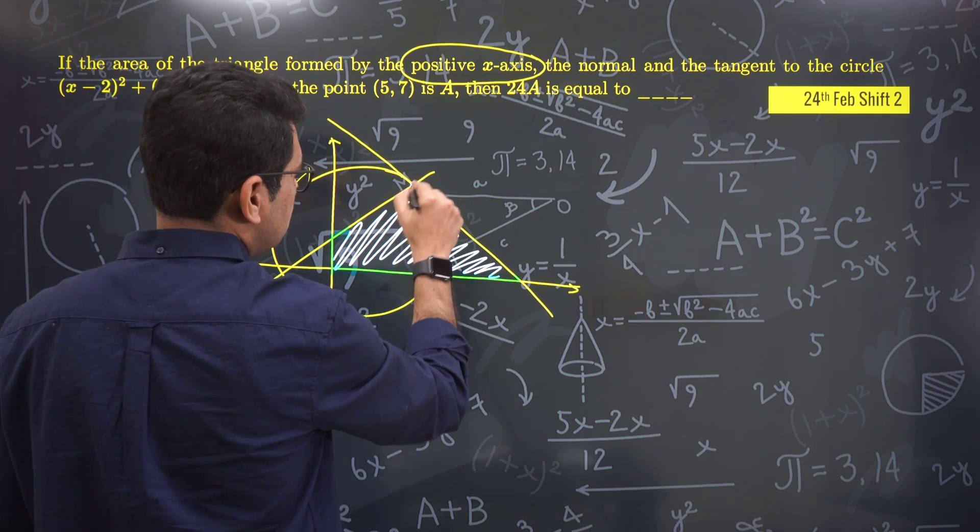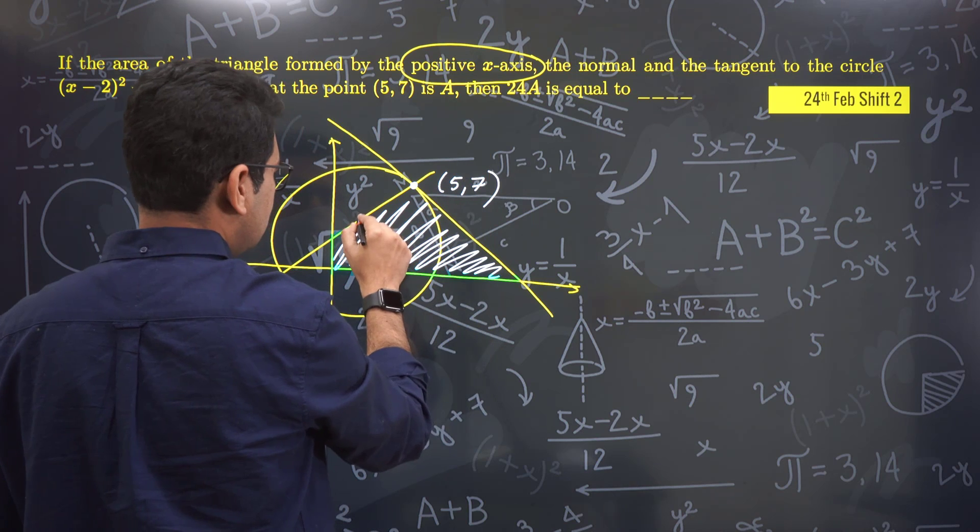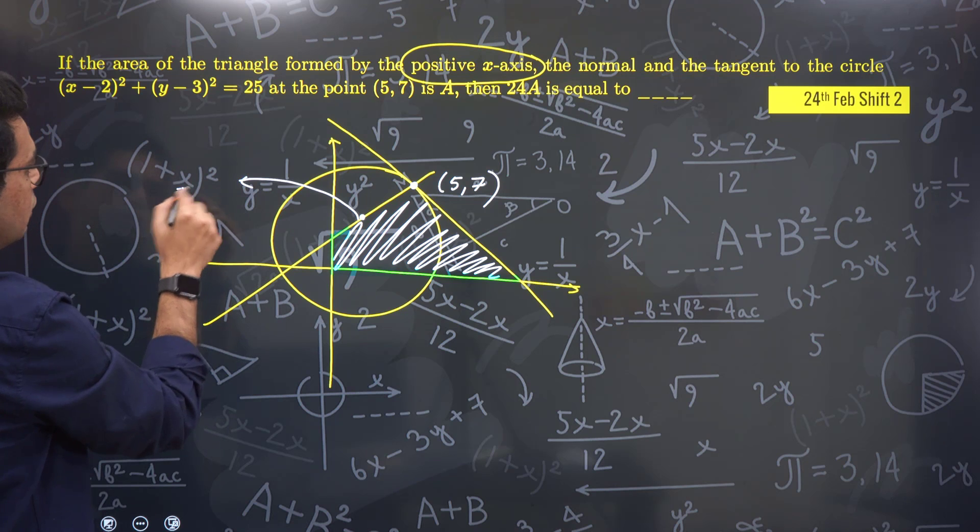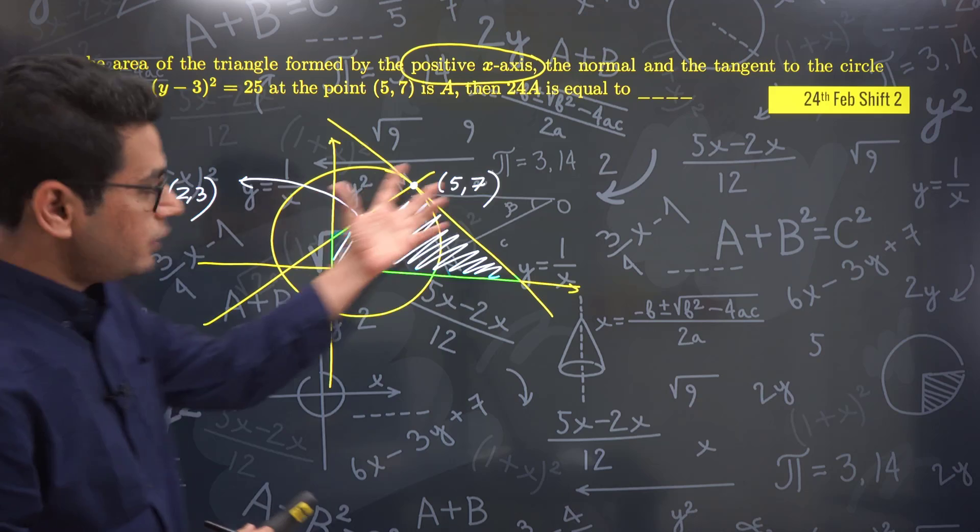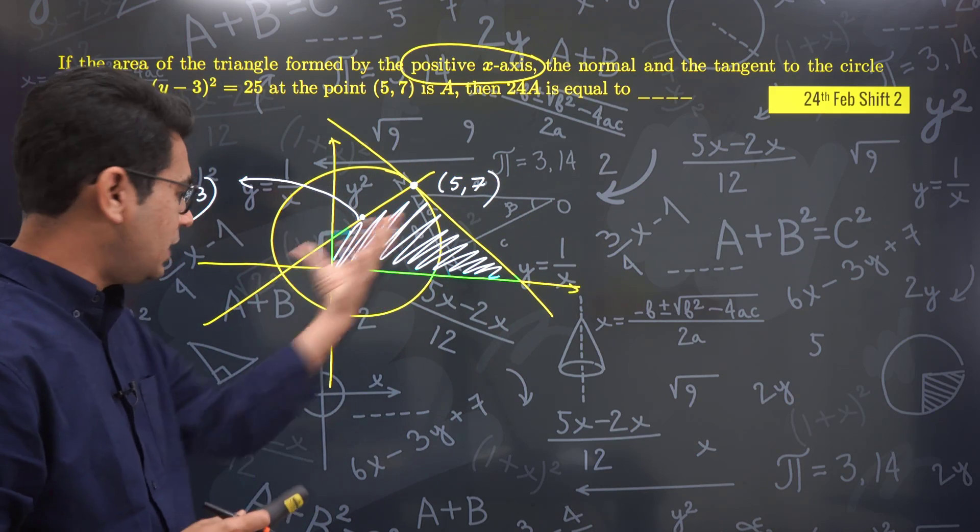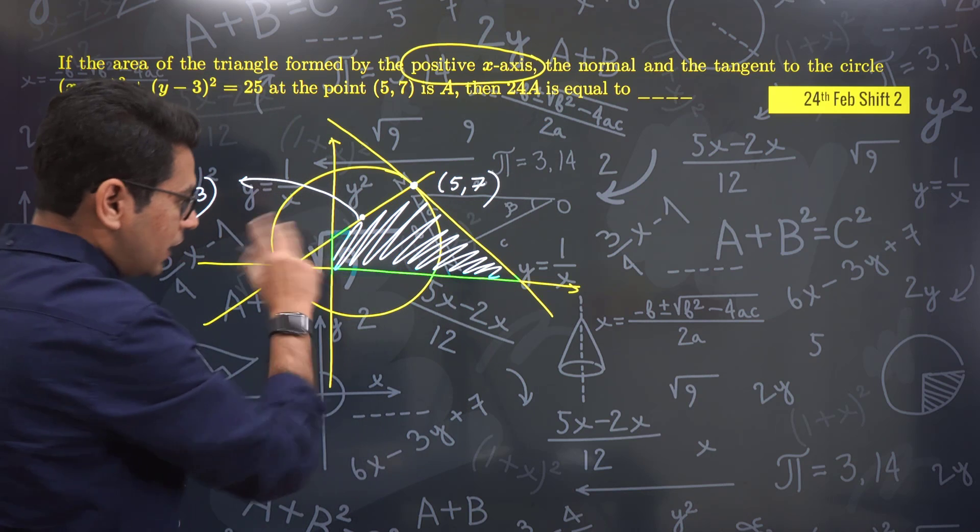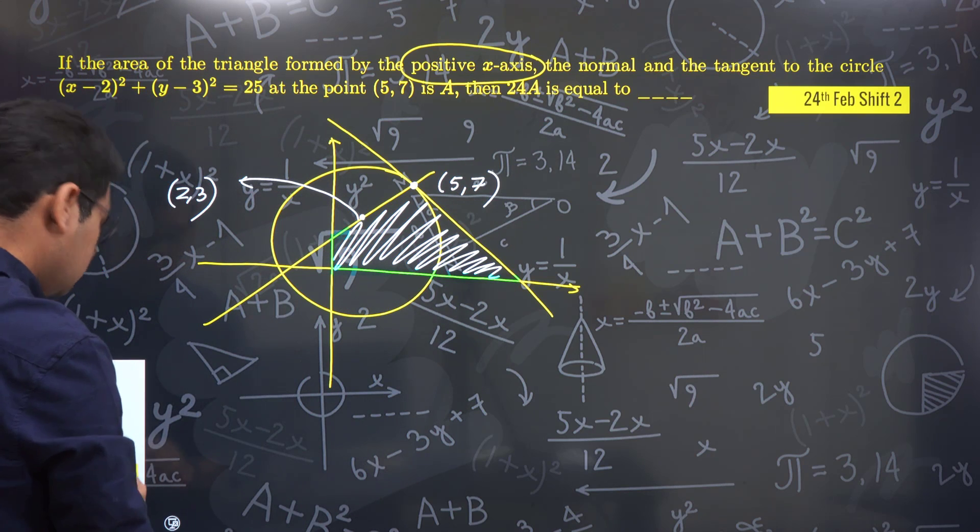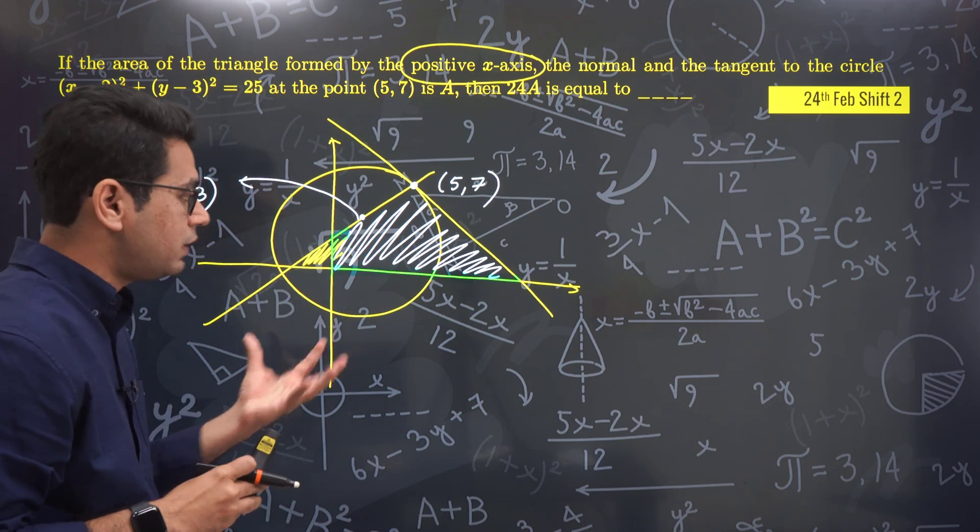Otherwise, the question is a lollipop question. You have the point 5,7, you have the center which is 2,3. The problem is, the answer that's been given - a triangle will only form when this portion is also added. Only then will a triangle be formed. Otherwise, what did it become? A quadrilateral figure was forming.